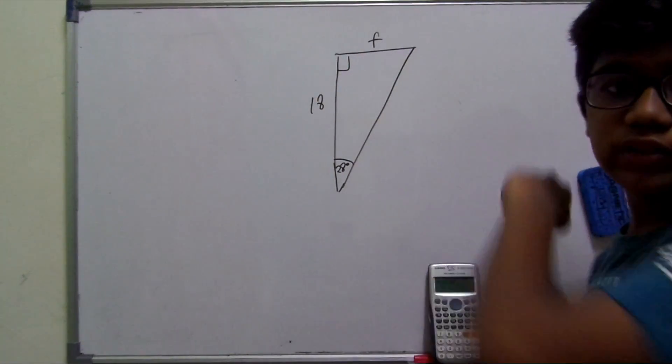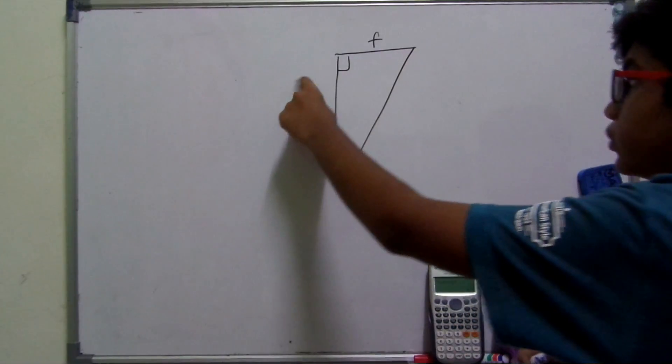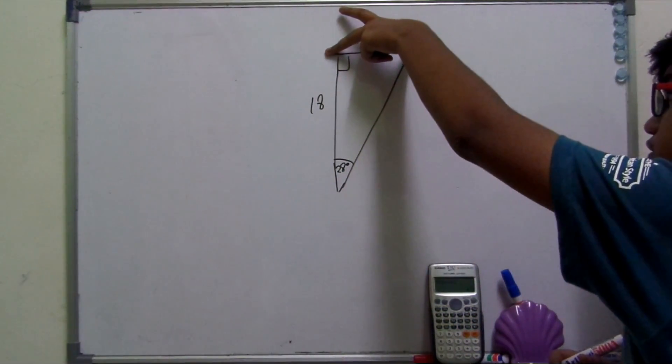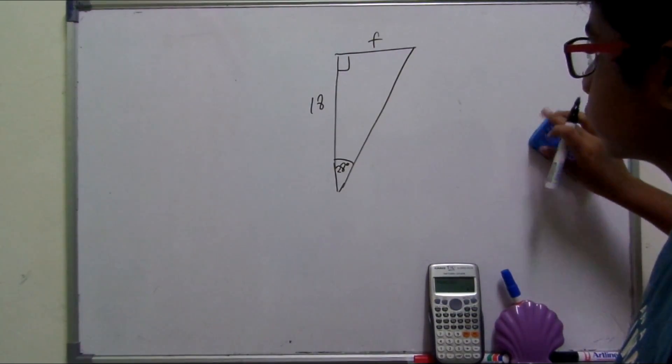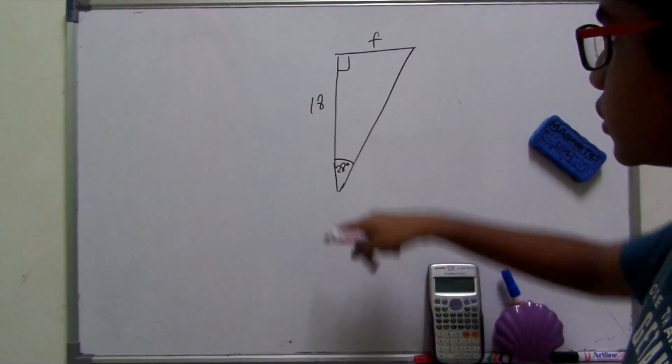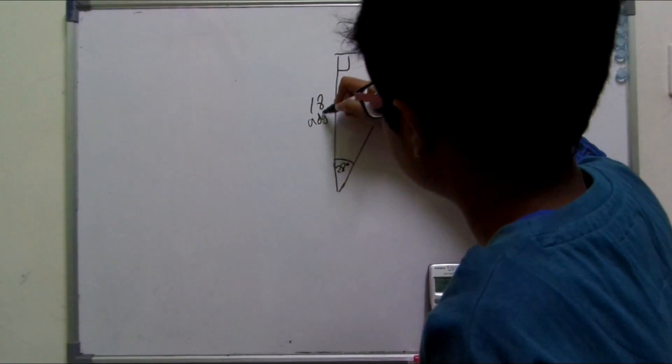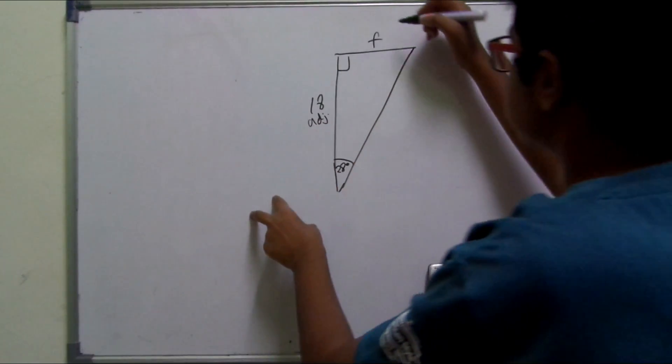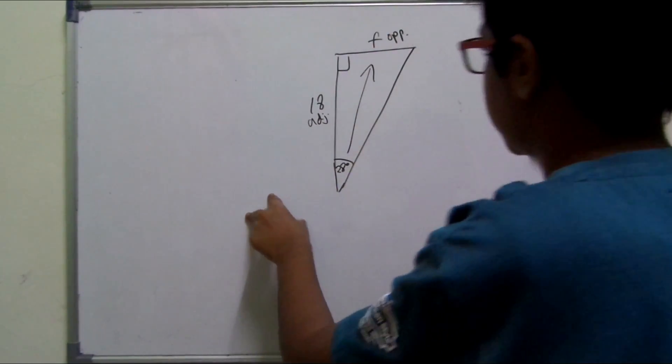Now we need to identify, to 28 degrees, what is 18? That will be the adjacent. And this one will be the opposite, because it's directly opposite to 28 degrees.